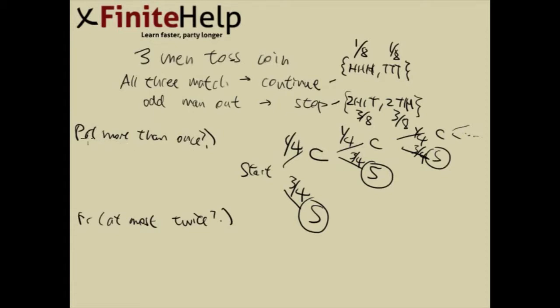But we don't actually have to worry about everything after this. So now we can actually look at the questions. So he asked for probability of more than once. If you look at the tree, the part that represents more than once is over here. And here I vertically separate out, here's one toss, here's two toss, here's three toss, and so on.